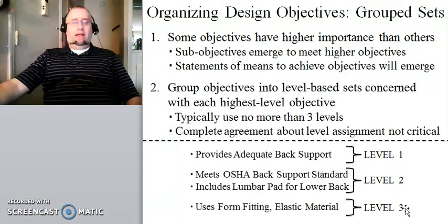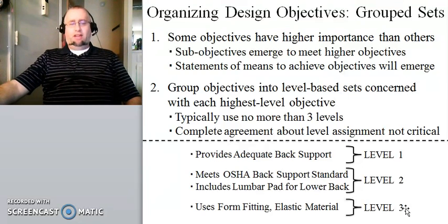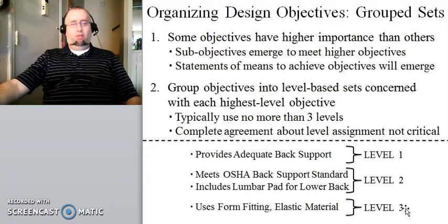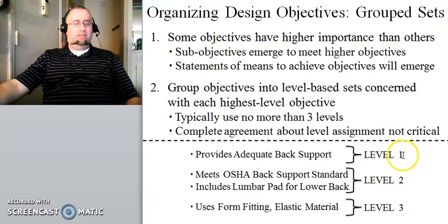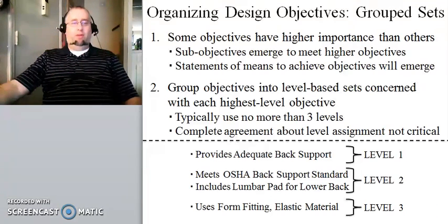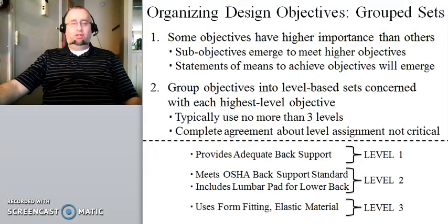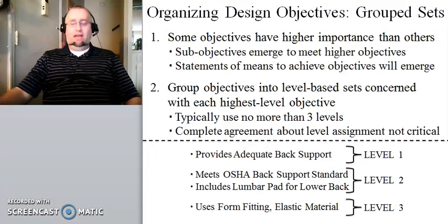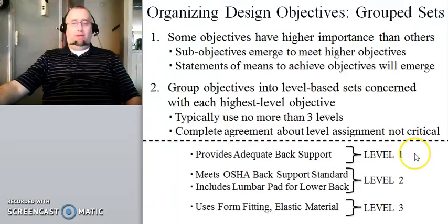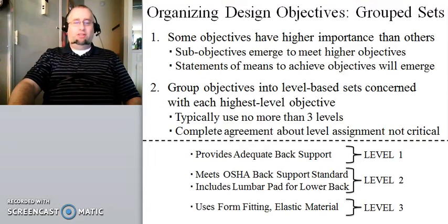Down at level three, in talking to the customer a bit more, the customer might have told us they want something elastic — some material where they sit in the chair and it conforms to their back. This is placed in level three because it is a means of achieving level two, which is itself a means of achieving level one. This is a specific solution to this particular design problem. It is okay to have whatever the current working theorized solution is actually present in a design objectives document.